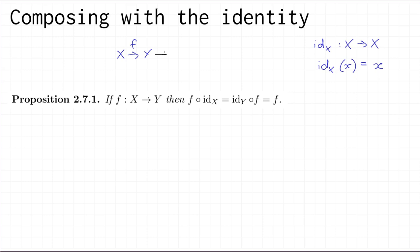We've got the identity on Y, which we could put after f, and we've also got the identity on X, which we could put before f. So we can form two compositions: f composed with the identity on X, or the identity on Y composed with f. What I want to show in this proposition is that when you compose f with the identity, you just get f again — it doesn't matter on which side you do it.